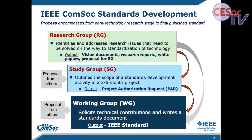The second step is what we call a study group. A study group essentially outlines the scope of a standardization project. It only exists for about three to six months typically, and the output is the request to actually start a standards group. In this period, you try to figure out the scope, who's going to participate, the general timeline, and put together a proposal to get IEEE to support the standardization. And then finally, we have a working group — that is the basic standardization activity — where the actual technical contributions come in and the actual standards document is written.